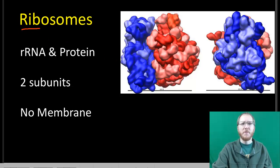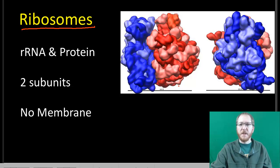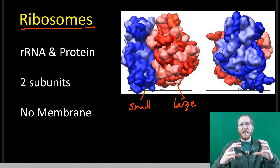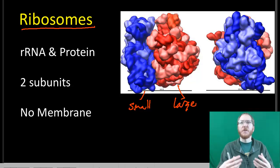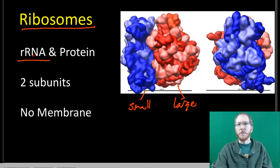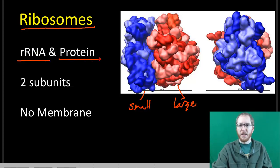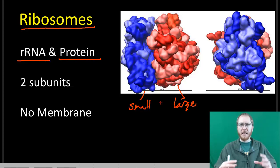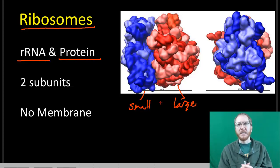Starting off with one of the easiest ones: ribosomes are probably the smallest organelle. They don't have a membrane surrounding them — they're just two subunits. You've got the large subunit and the small subunit; red is the large, blue is the small in this picture. When these two attach, they go through a process called translation that allows them to build a protein. They are composed of rRNA — ribosomal RNA — made from DNA, plus some proteins. It's technically a mesh of rRNA and protein together that does the job.